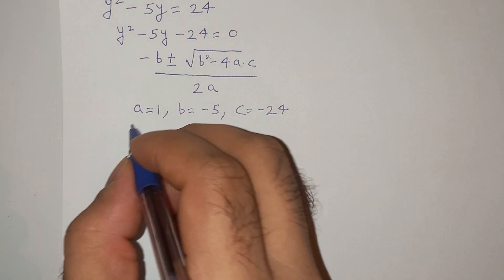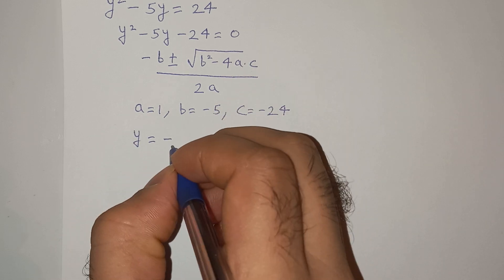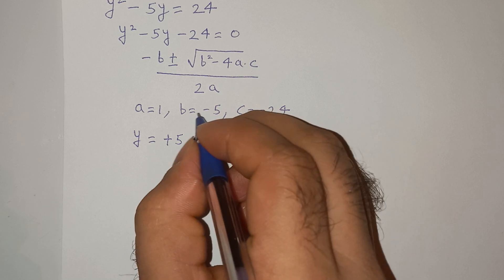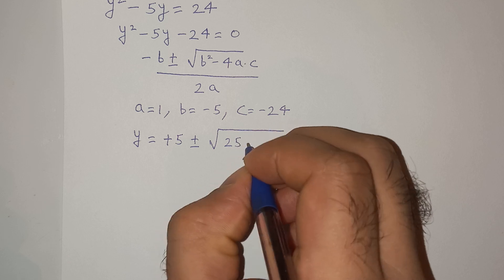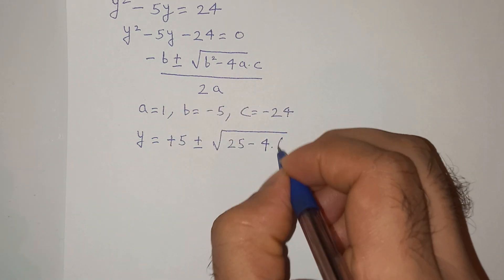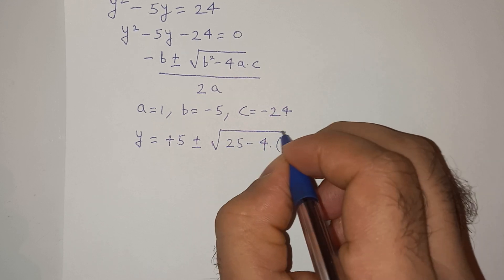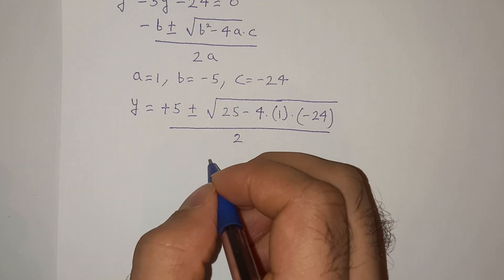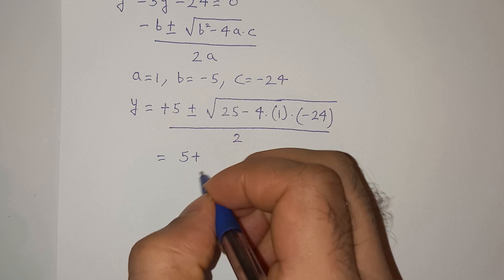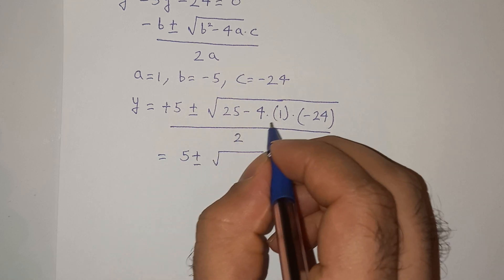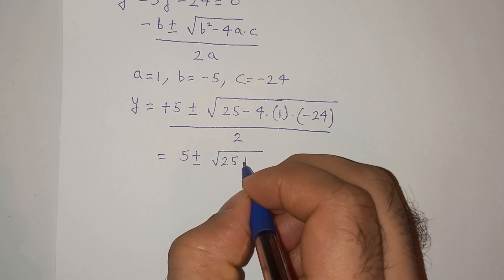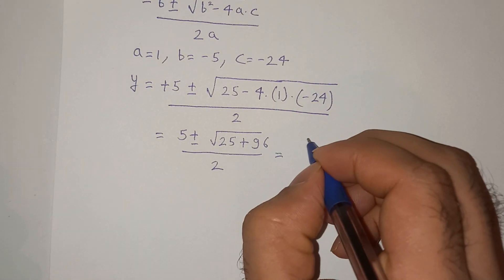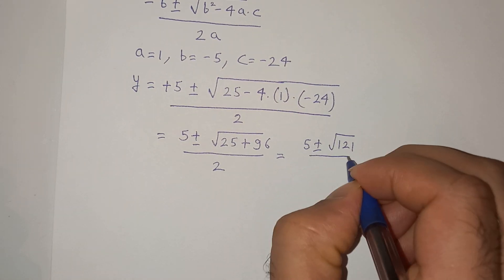So the roots will be y equals to minus b, which is minus of minus 5, giving plus 5, plus-minus under root of b square — that is minus 5 square which is 25 — minus 4 multiplied by a which is 1 and c which is minus 24, all divided by 2. So we get 25 plus 96 under the root, giving root of 121, divided by 2.